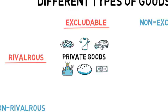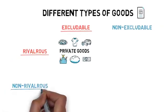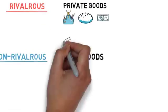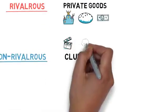When it comes to goods that are excludable and non-rivalrous, we end up with club goods, such as cinemas, private parks or satellite TV.